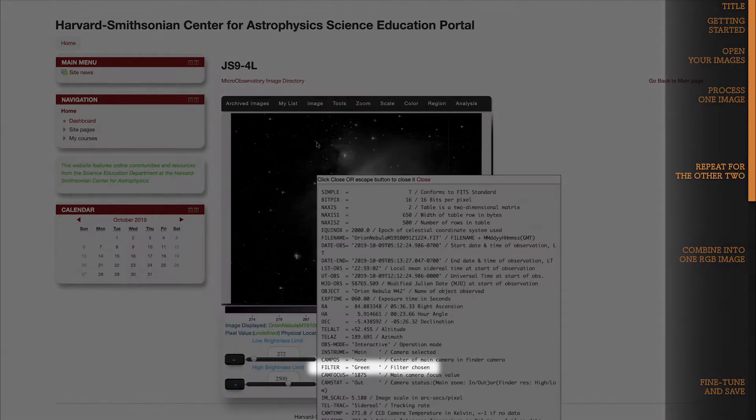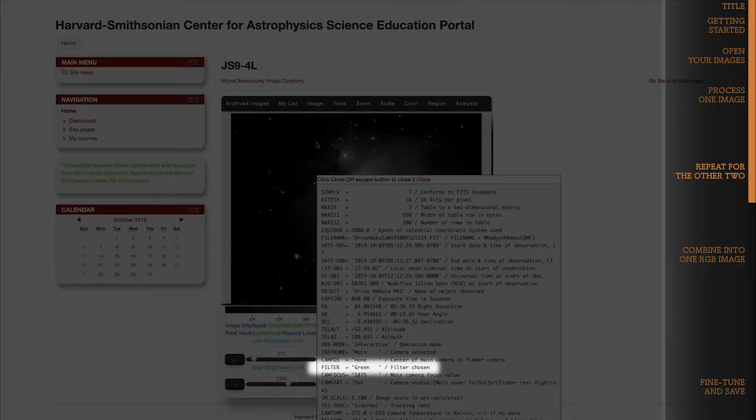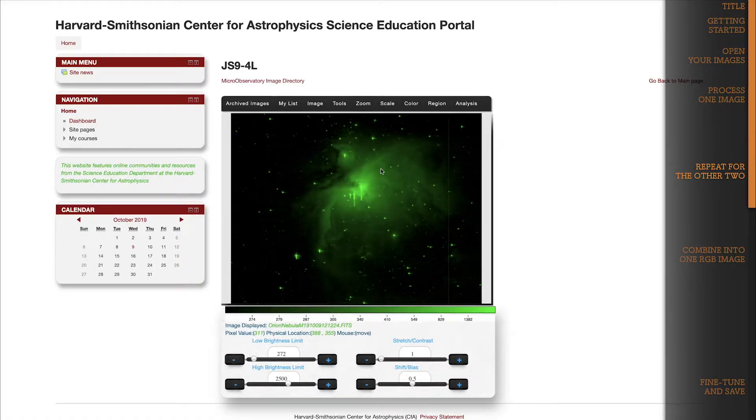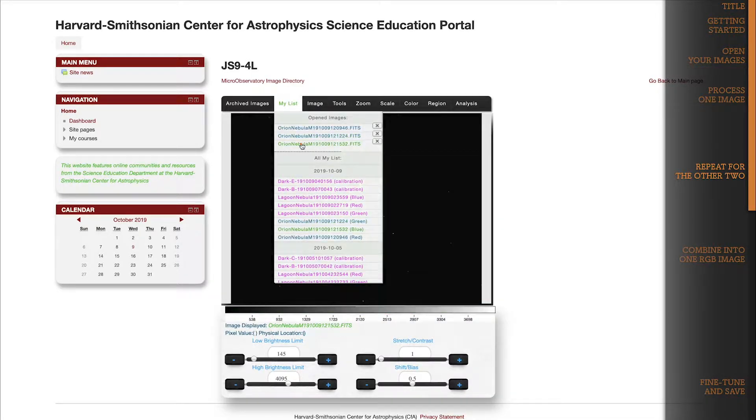Well, look at that. Looks like filter equals green for this image. So we'll choose green in the color dropdown, and now we have our green filtered image using a black to green color scale. There's one left, so choose the third open image in our list.